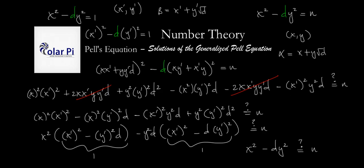That's it for this video. My final video will show why solutions to x squared minus 6y squared equals 3 are related to finding a and b satisfying that sum-of-squares equation. Watch the next and final video. Take care.